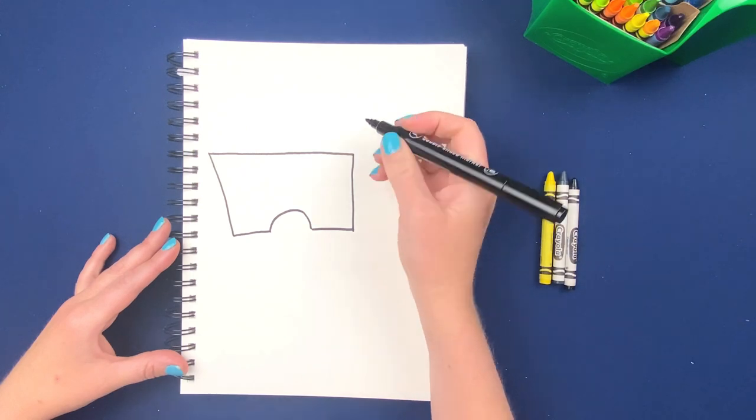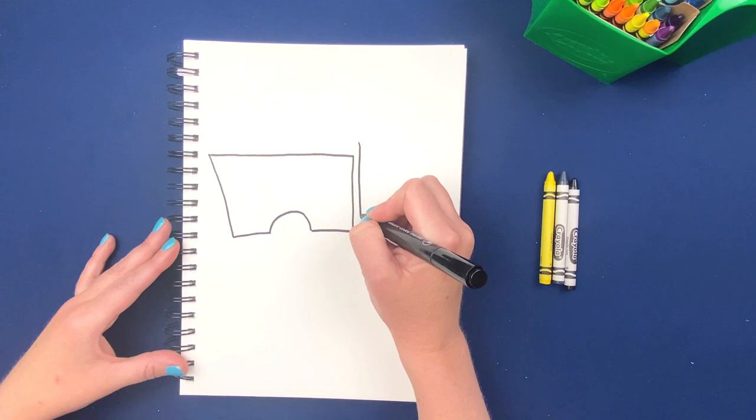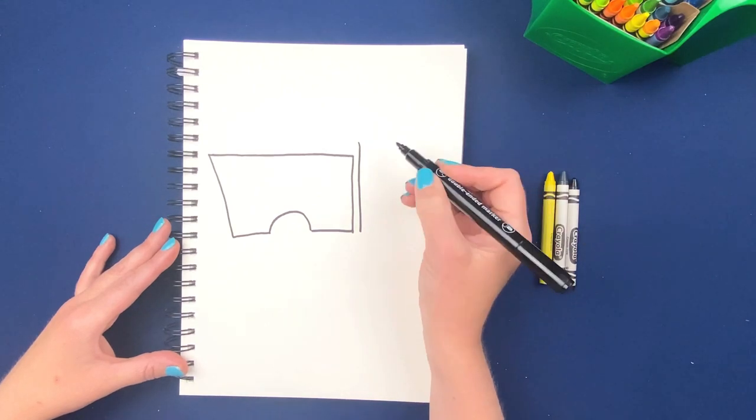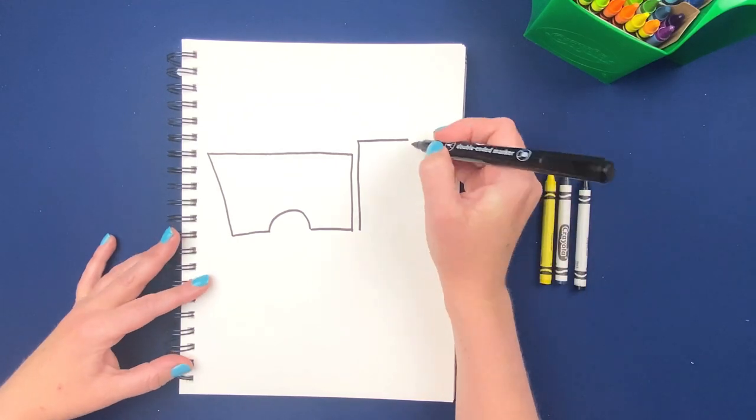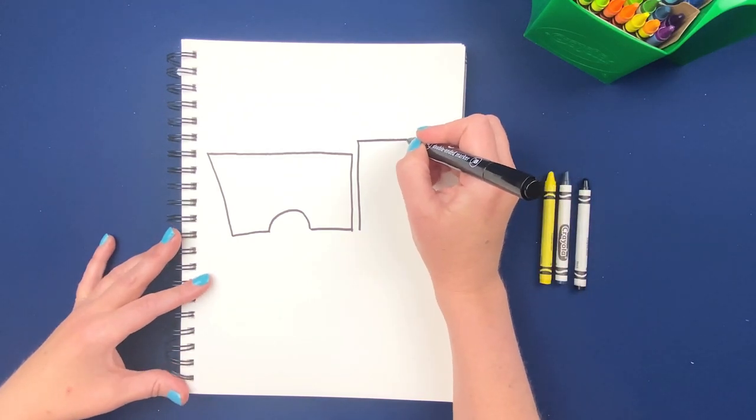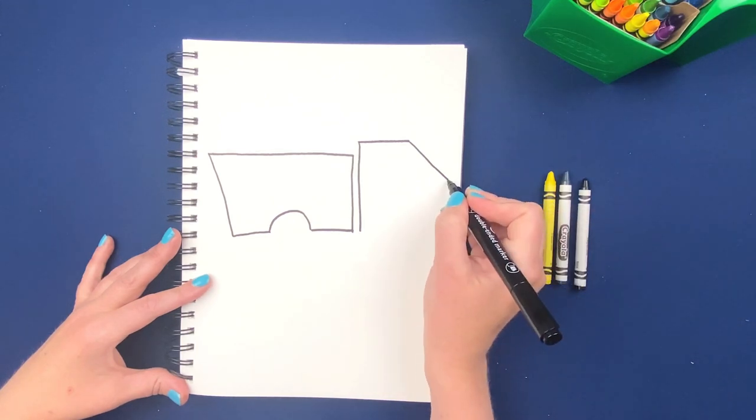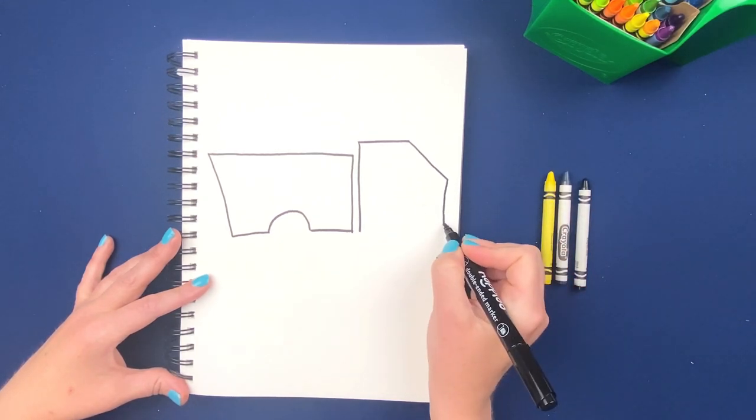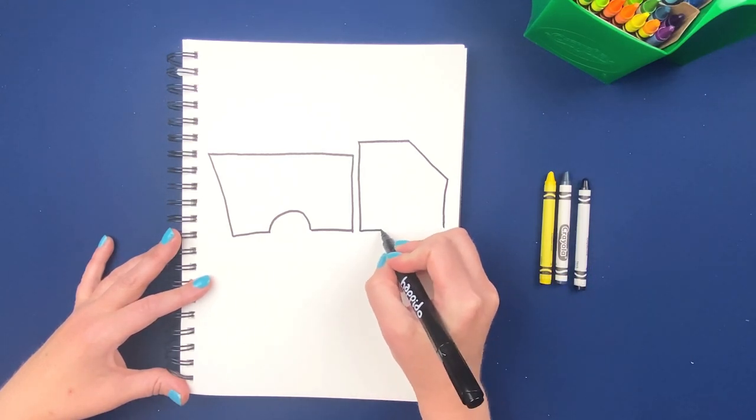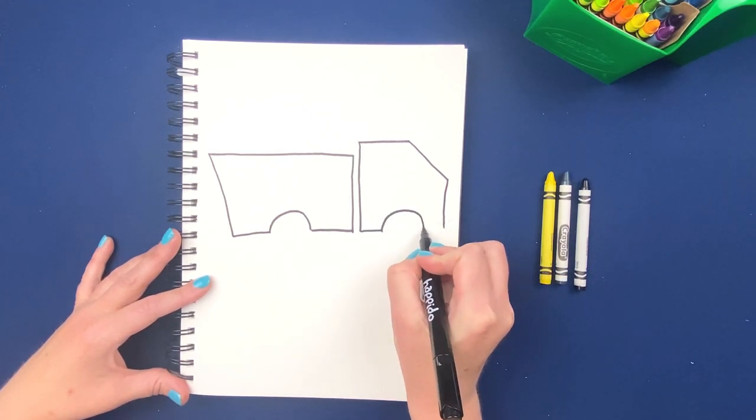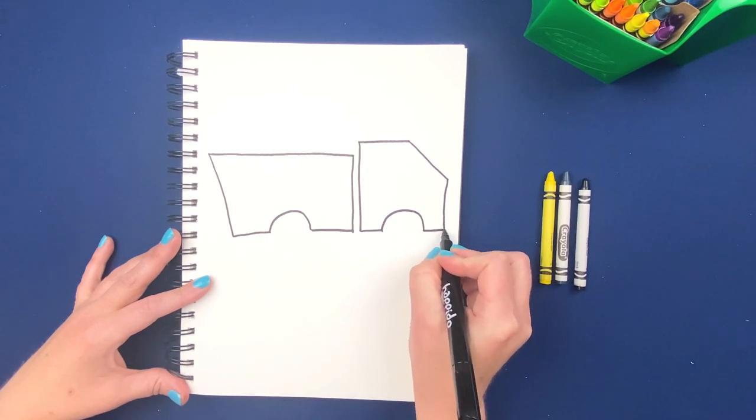Now we're going to go in and draw the cab. Start a little bit higher, do a straight line down. Straight line across. And then a diagonal line. It's about halfway down. We're going to come straight down again. And then same as with the back, we're going to make that big semicircle. That'll leave room for the wheel. Meet back at the end.